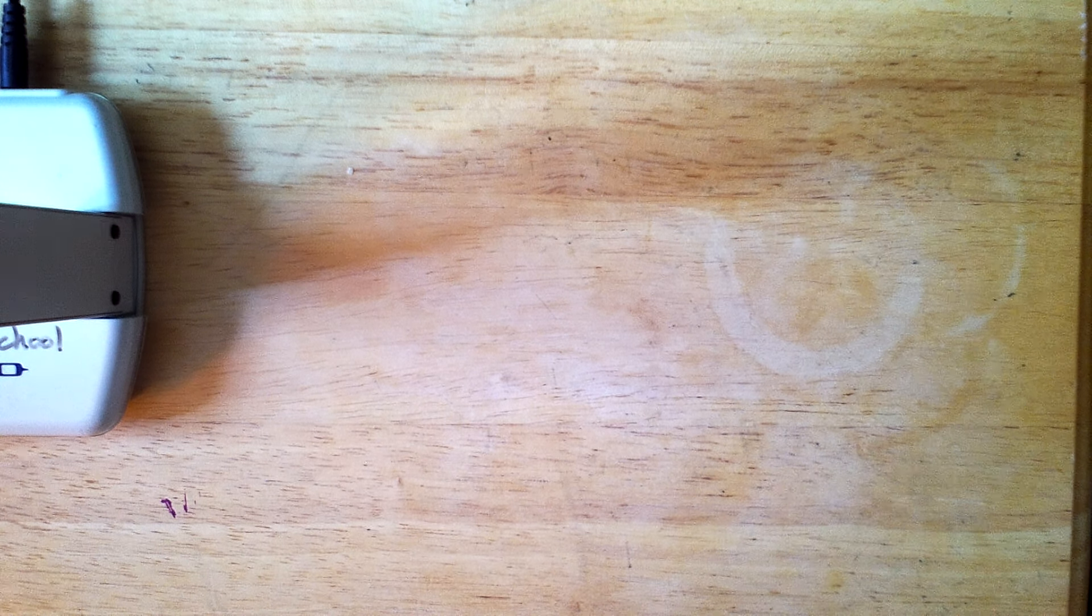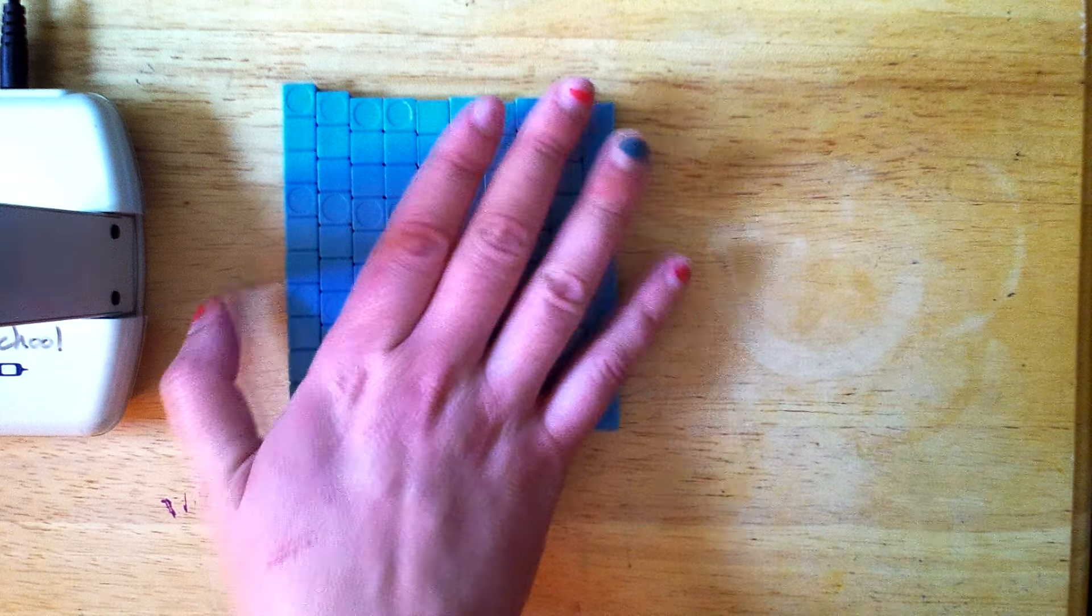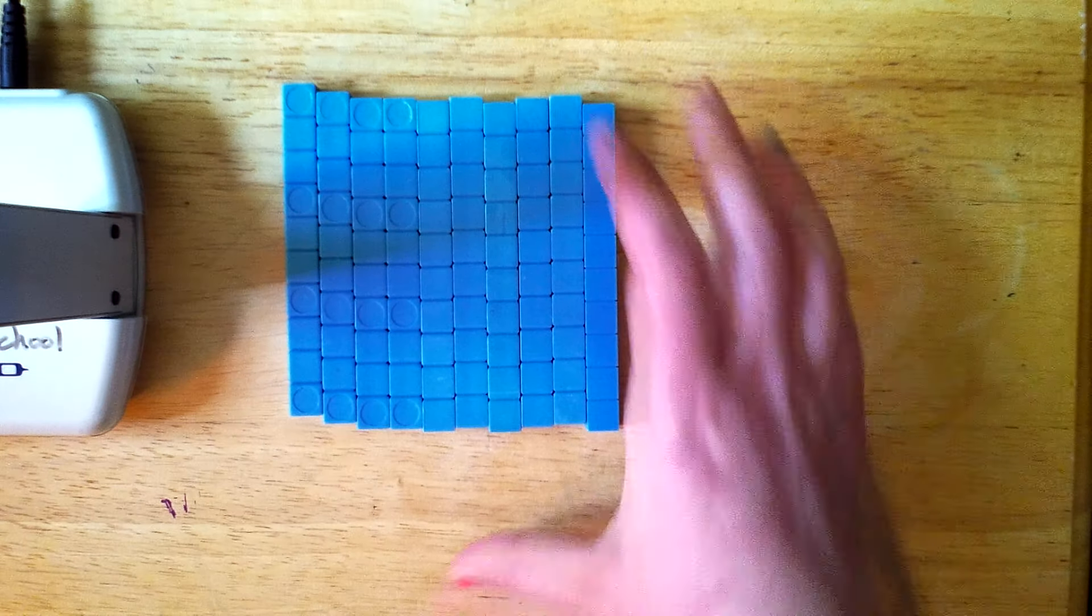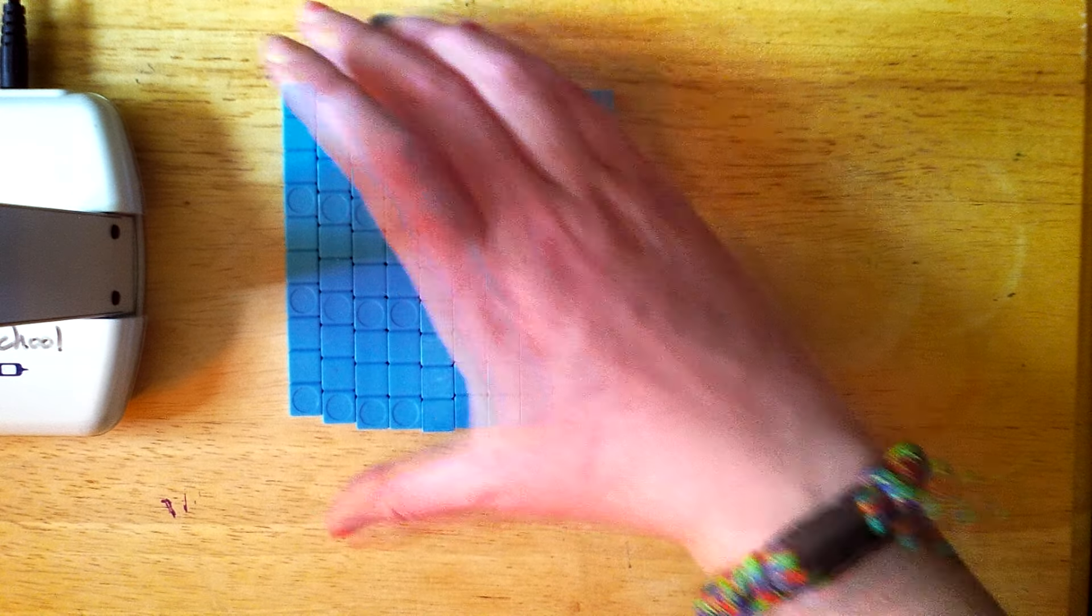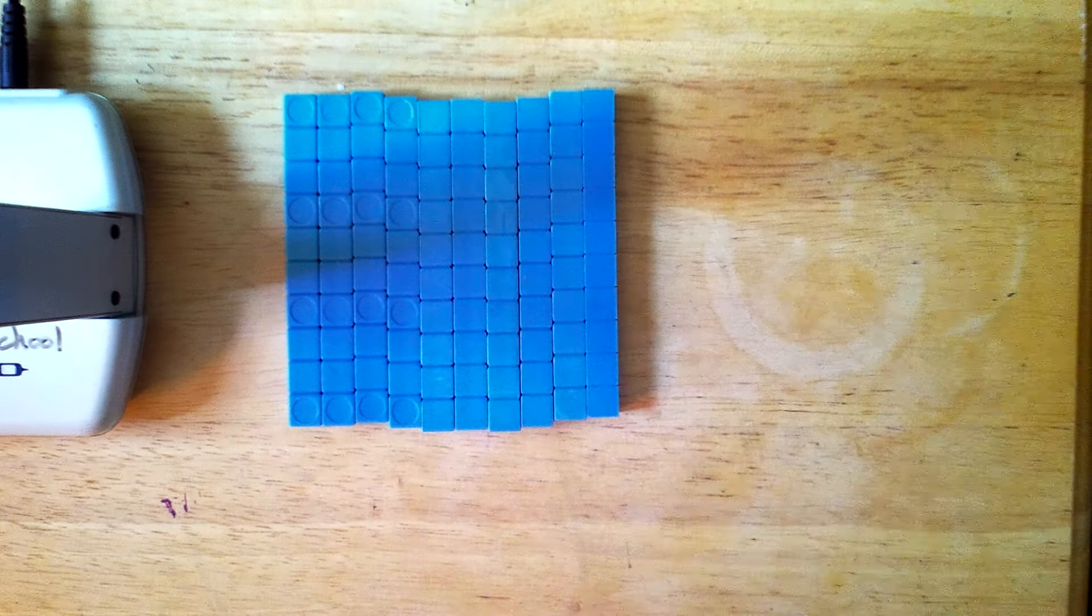Now let's look at the number of the day. The number of the day is 153, and that looks like this. It has 100 in the hundreds place. I had to make it with tens because I left my hundreds block at school.